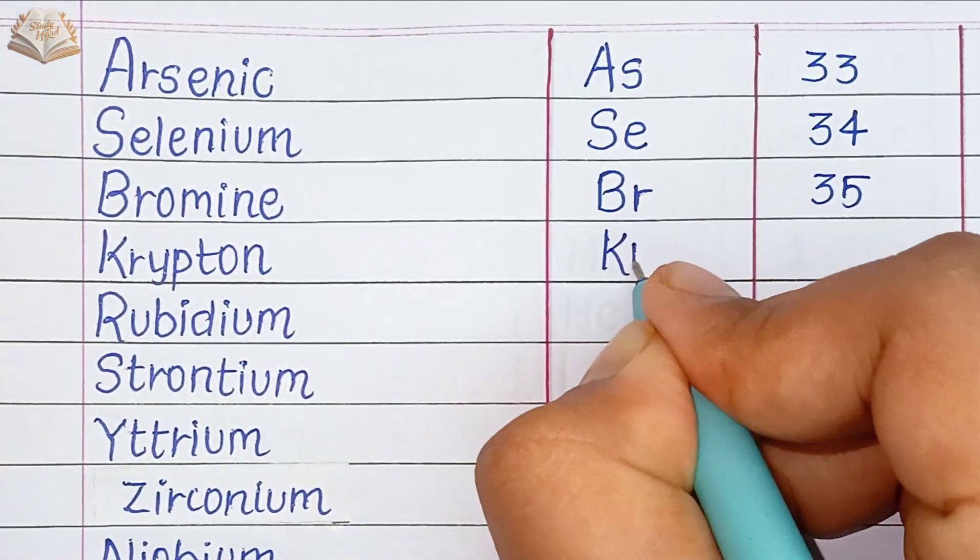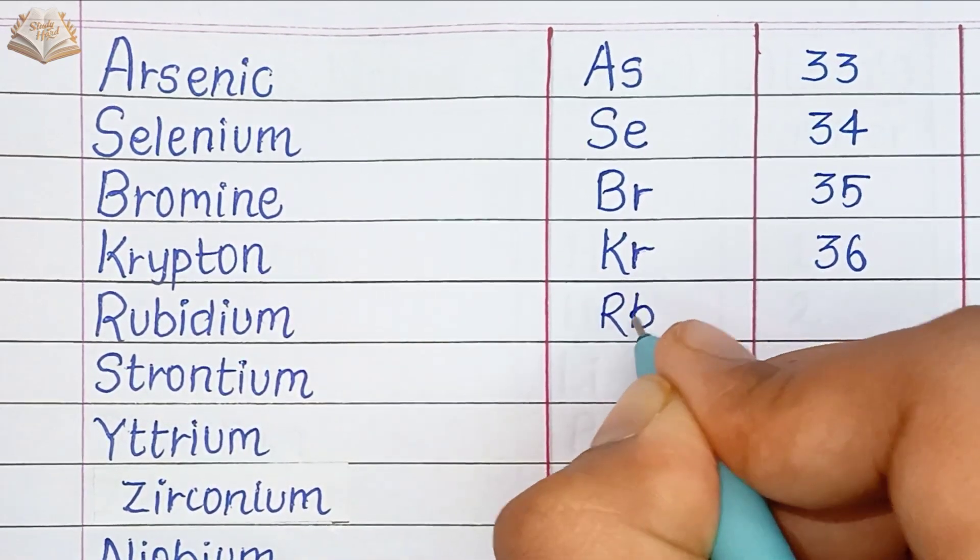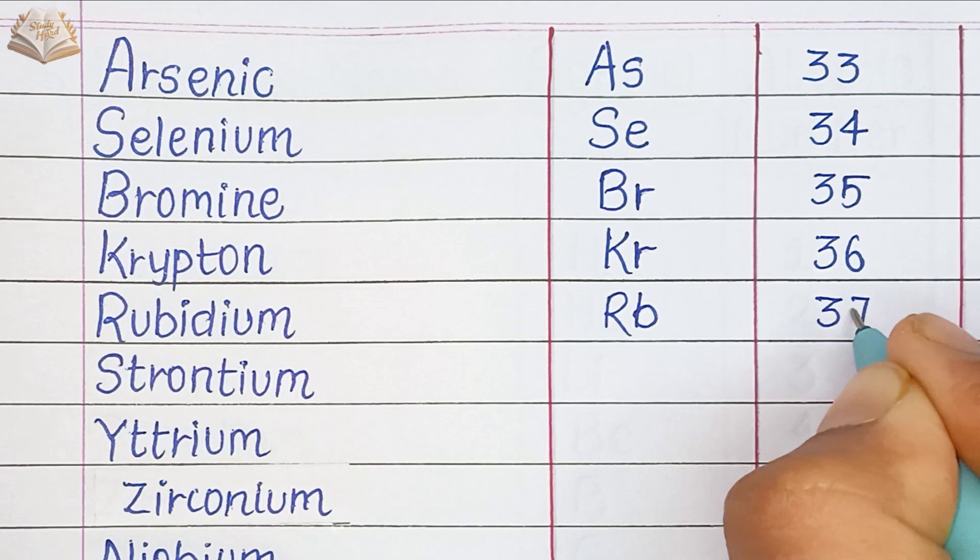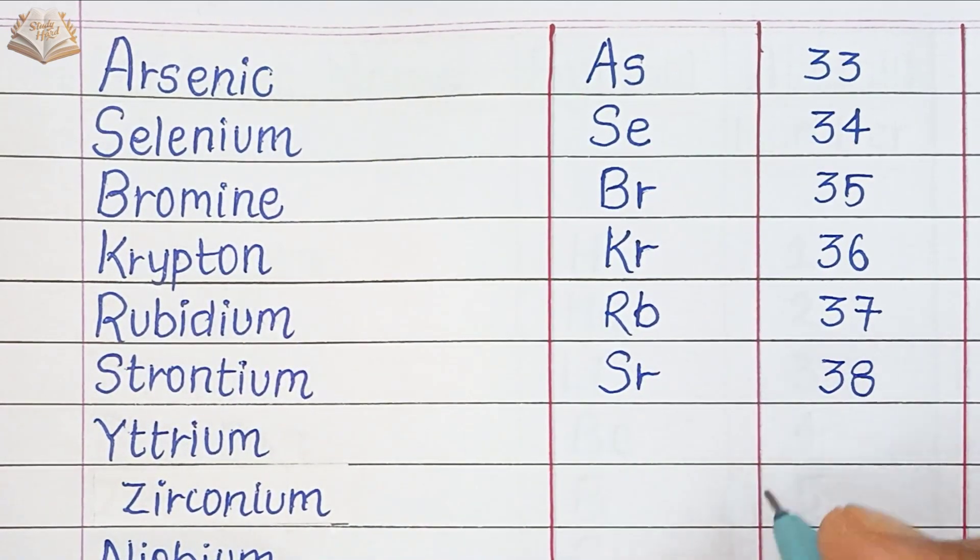Krypton, KR, atomic number 36. Rubidium, RB, atomic number 37. Strontium, SR, atomic number 38.